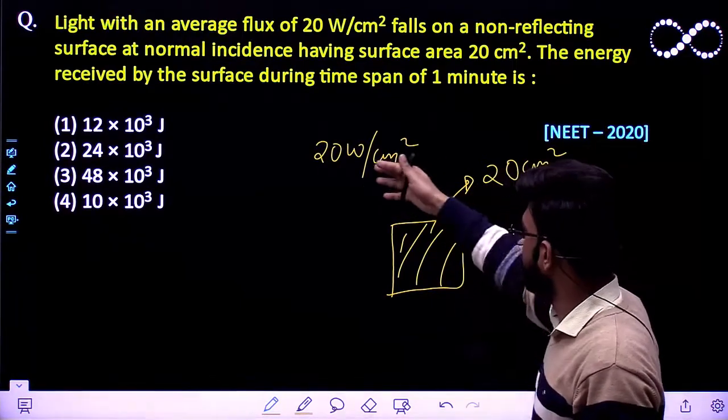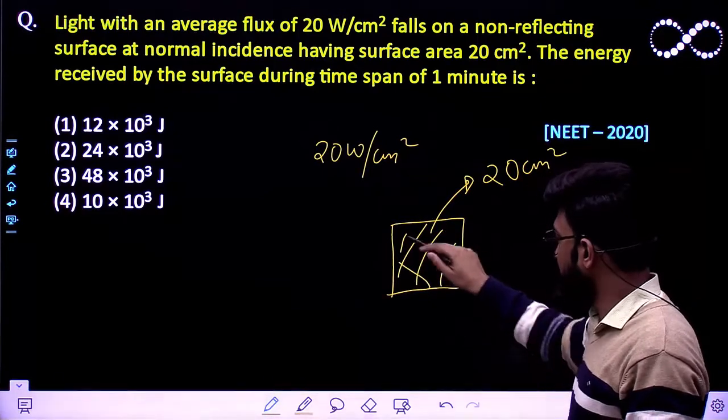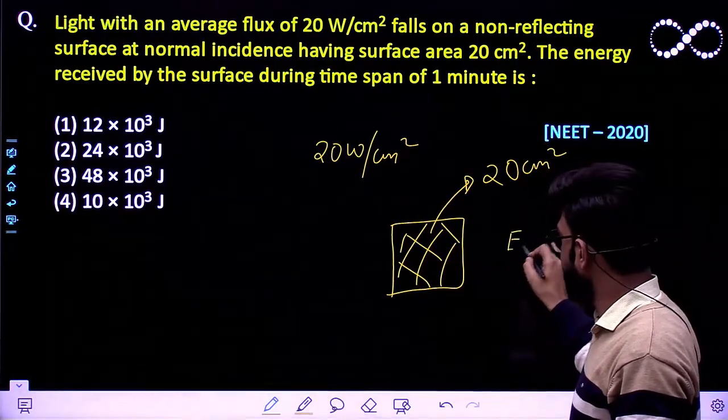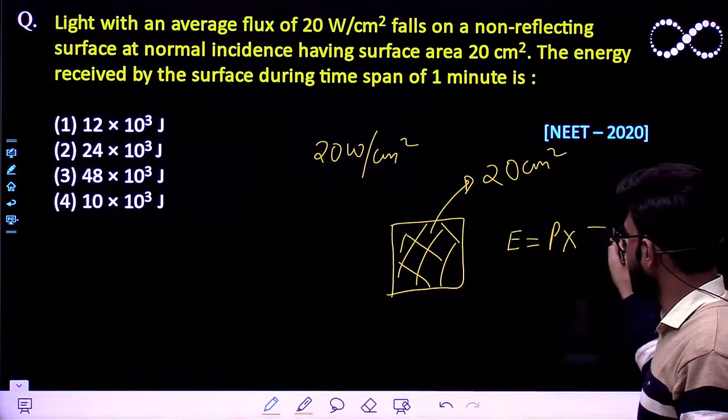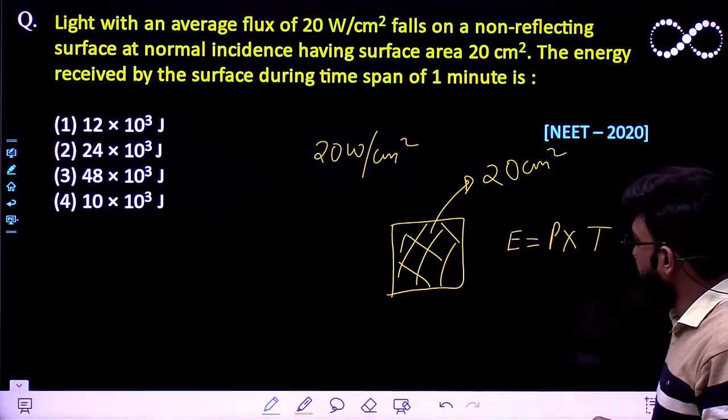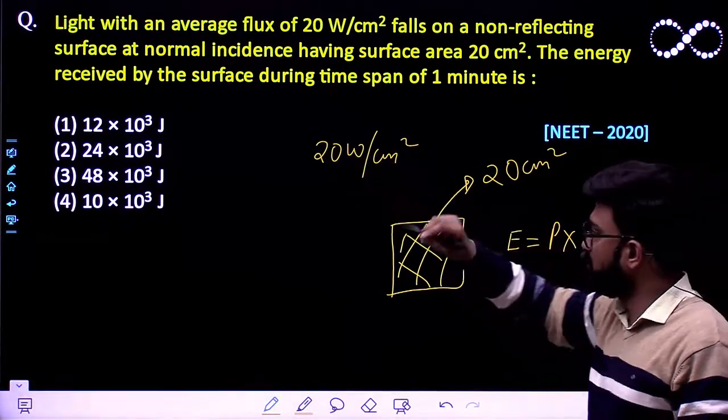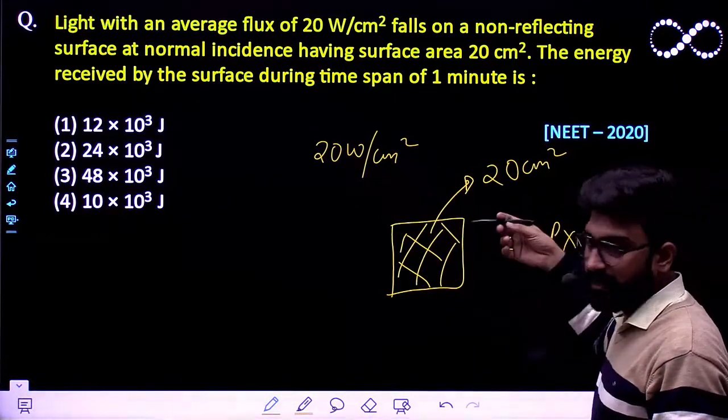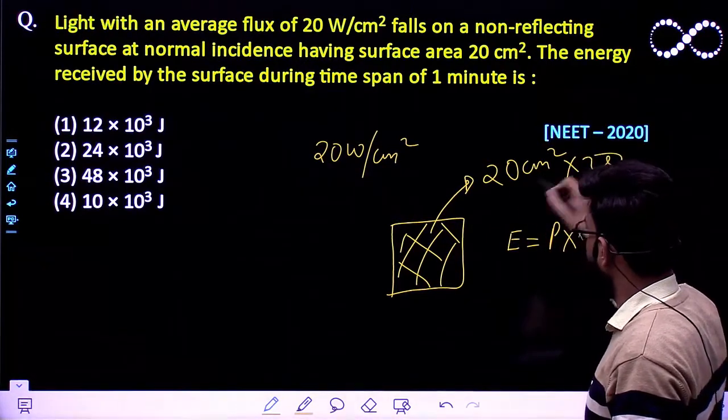So what would be the total power of energy supplied to this area of 20? The total energy supplied, we also know that the equation, this energy is nothing but power multiplied by time. This is the area, this much of energy supplied on 20 watts. So what would be the power supplied on 20 centimeter square? It would be the total power would be 20 into 20.